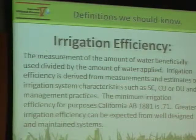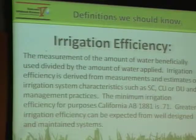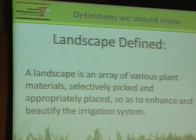They come up with things like SC — scheduling coefficient — CU, coefficient of uniformity, and DU, distribution uniformity. All that boils down into the formulas you see in AB 1881, which is now the ET adjustment factor, where the ET irrigation efficiency is required to be at 0.71. That doesn't mean it is — it could be lower or higher. My favorite definition: landscape is an array of various plant materials selectively picked and appropriately placed to enhance and beautify the irrigation system.